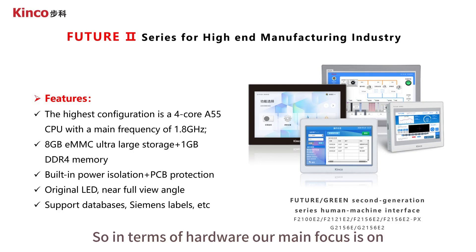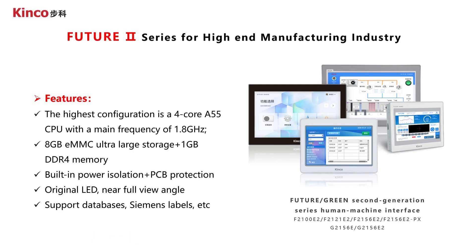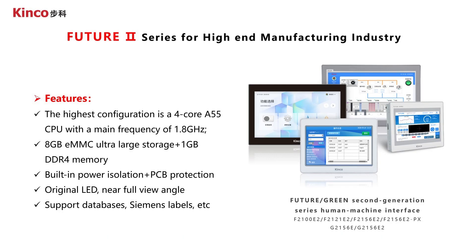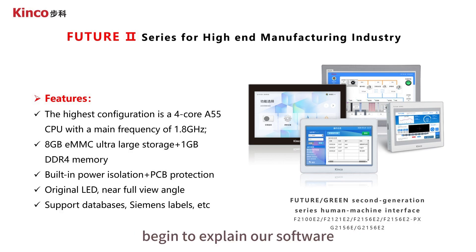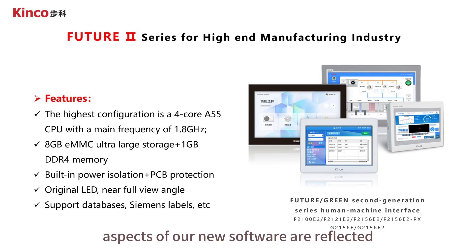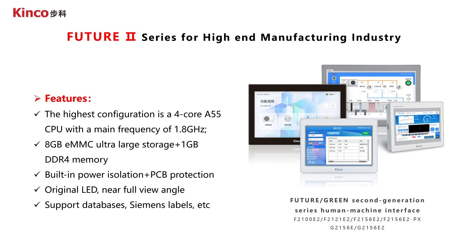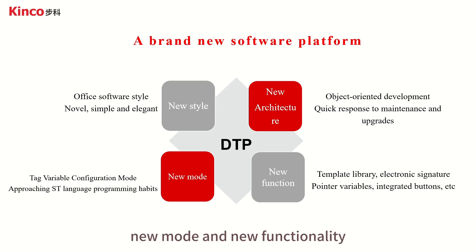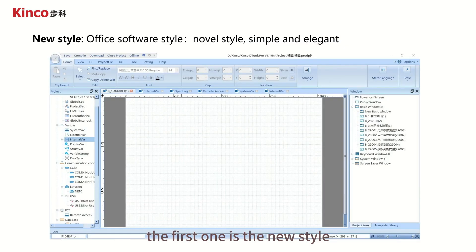In terms of hardware, our main focus is on high performance, high quality, and terminal experience. After discussing the hardware, we will begin to explain our software. Let's briefly introduce the new aspects of our new software — new style, new architecture, new mode, and new functionality. The first is the new style: the software adopts the Office style that we are all familiar with, making the graphics more beautiful and tidy and easier to use.